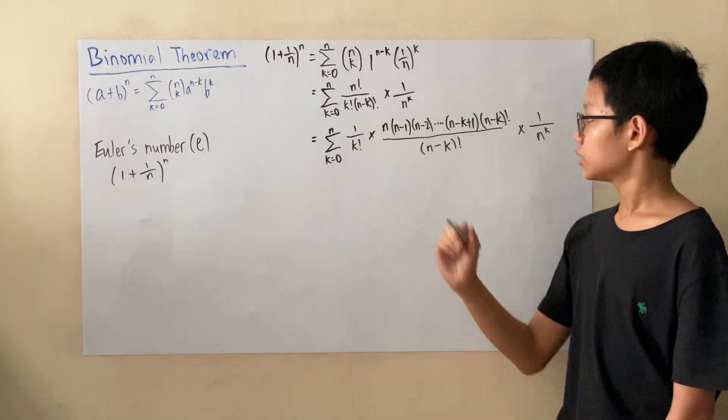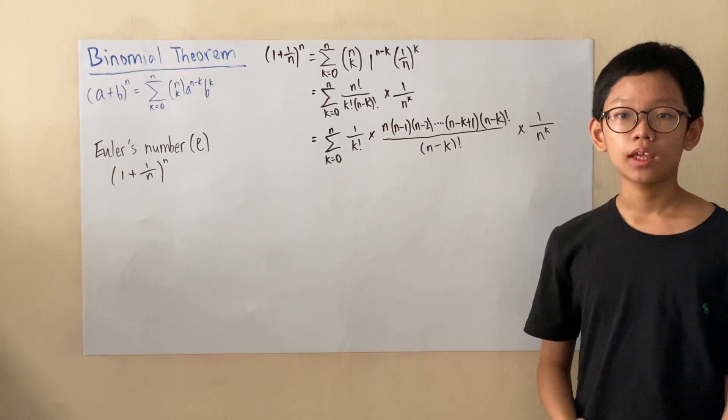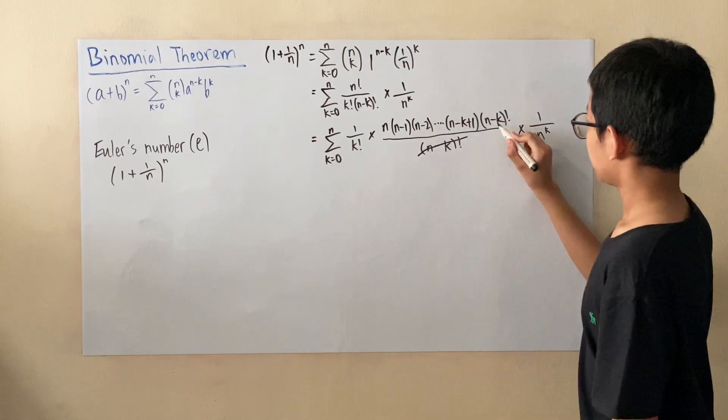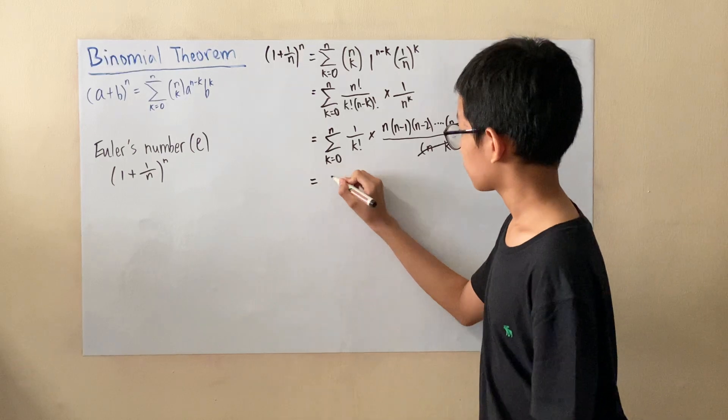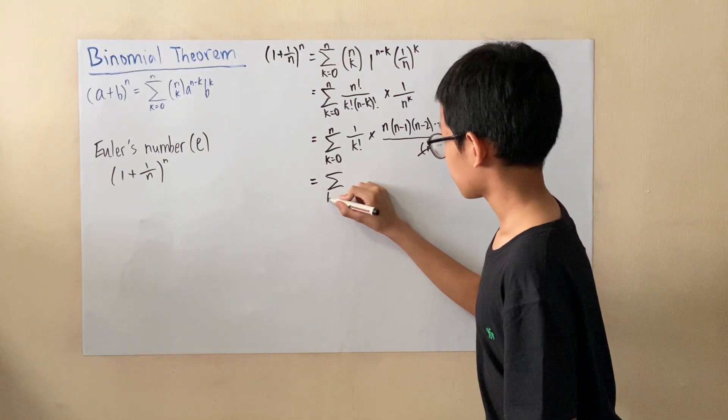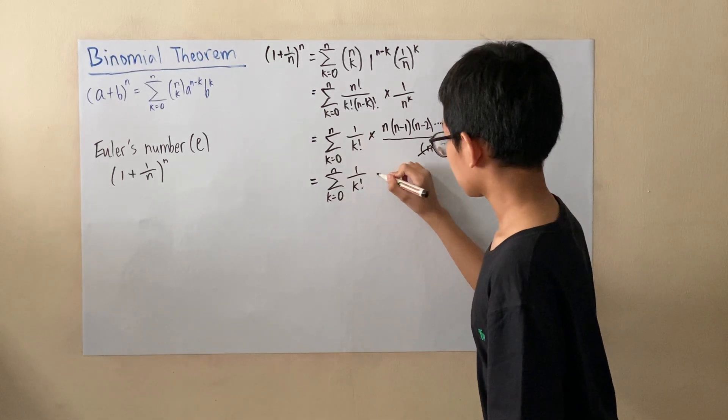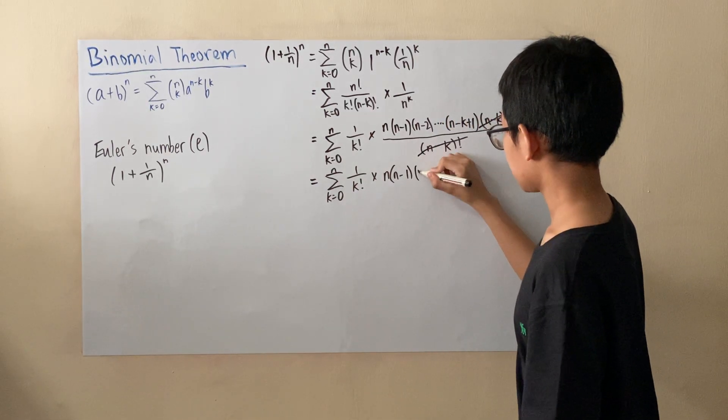So now, the numerator over here, all the operations are multiplication. And so we'll be able to cancel out (n-k) factorial in the denominator and (n-k) factorial in the numerator. So this is what you have left.